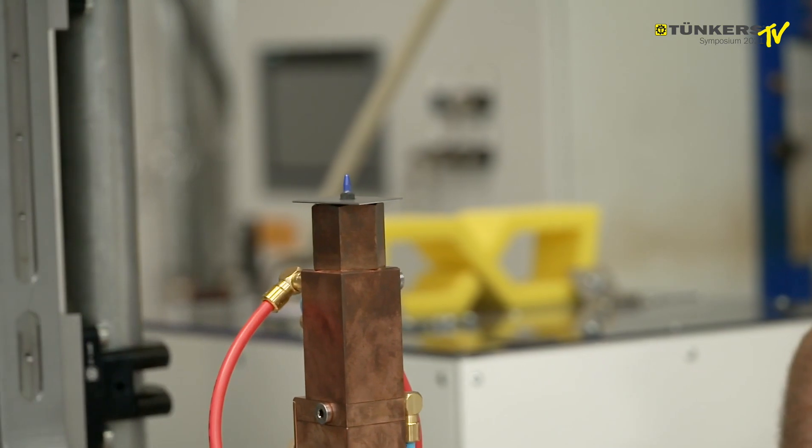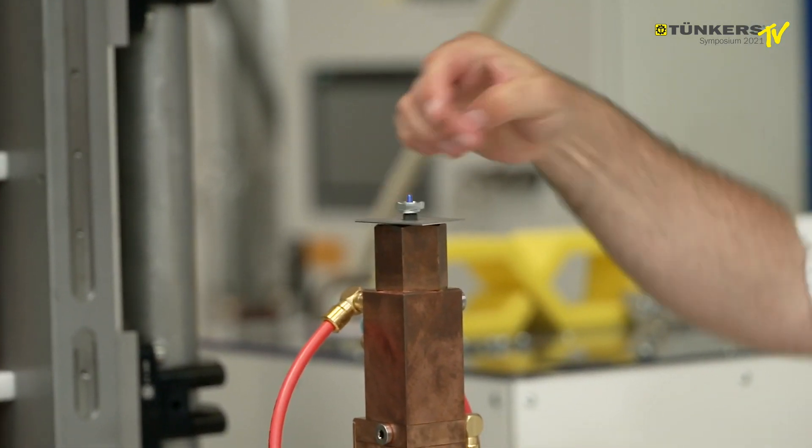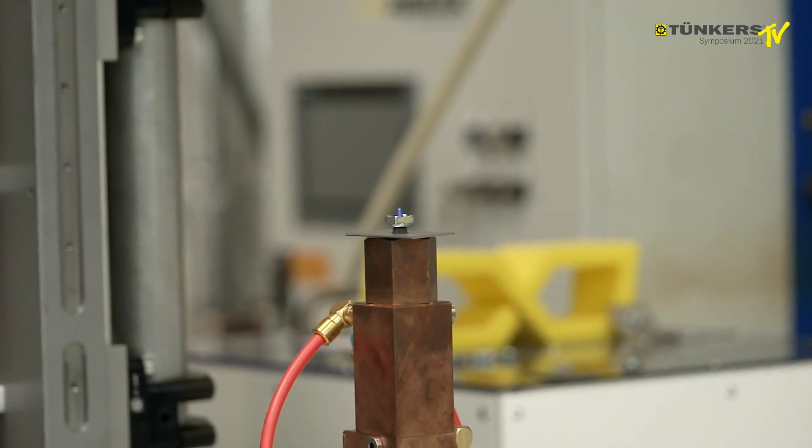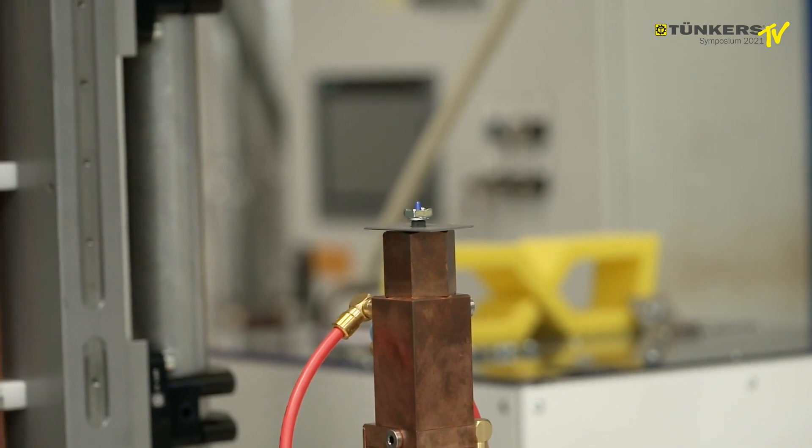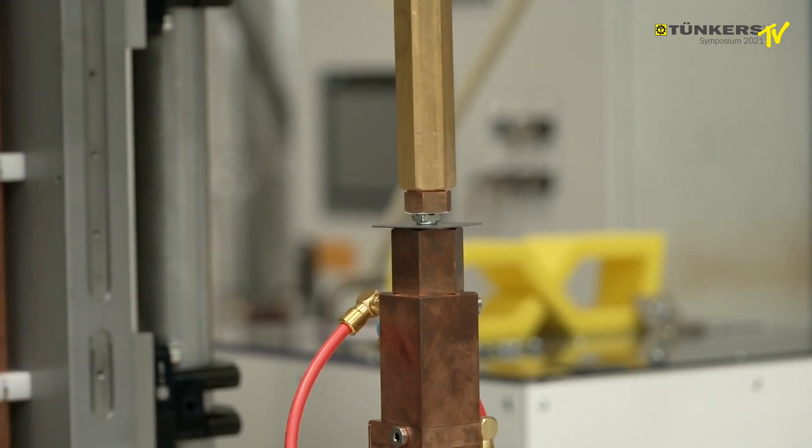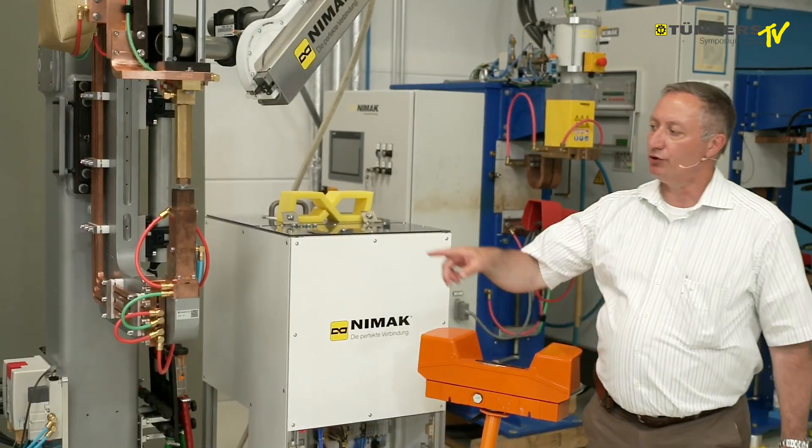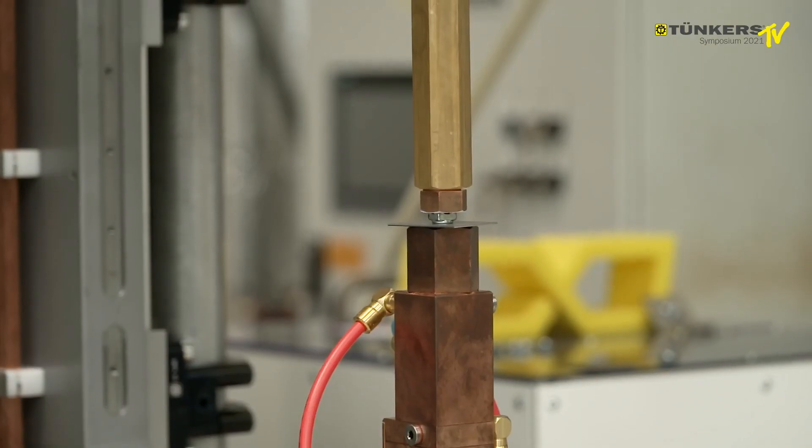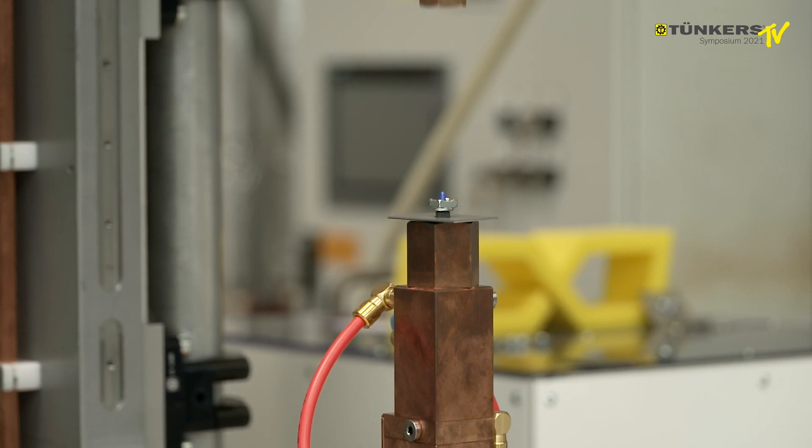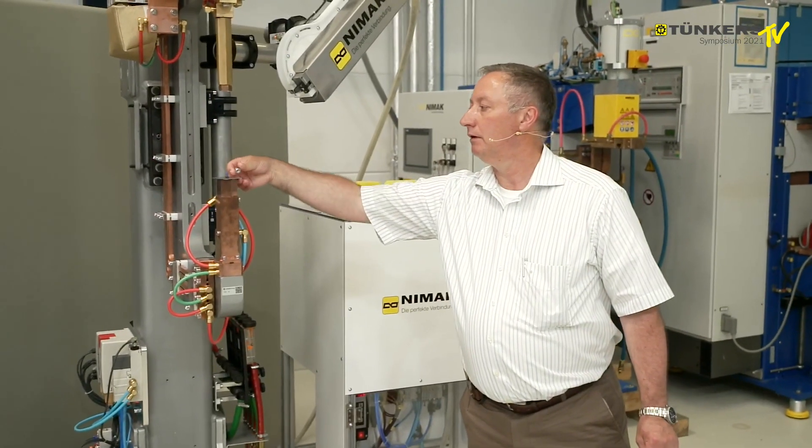And as the final possibility, we have this here. The nut is put on its head in the wrong position. Once again, the system detects it and thus sends a warning, an error message to the controller.